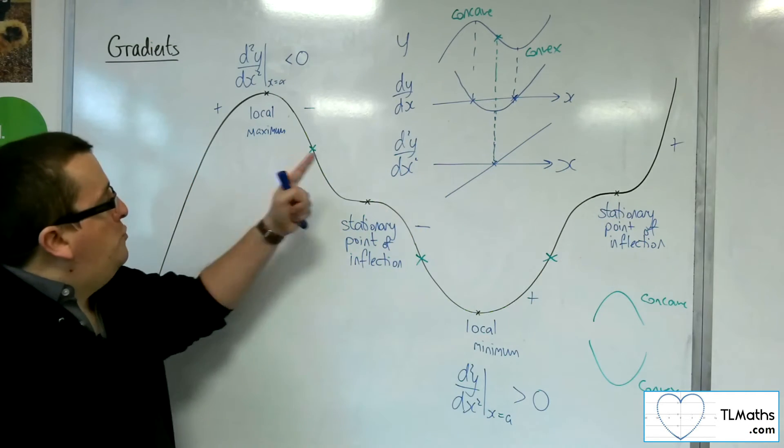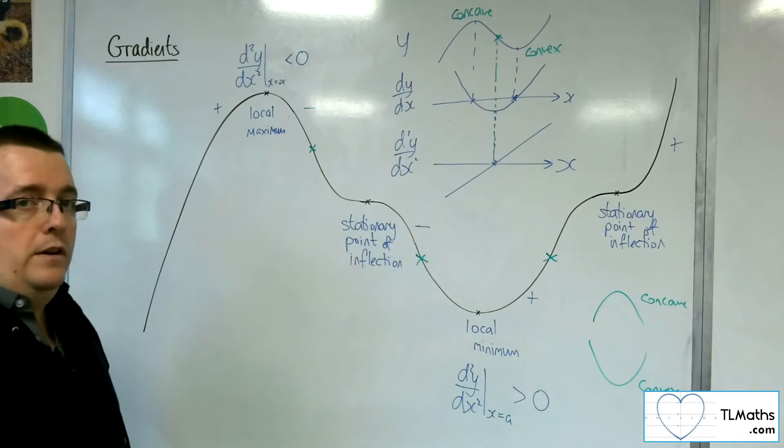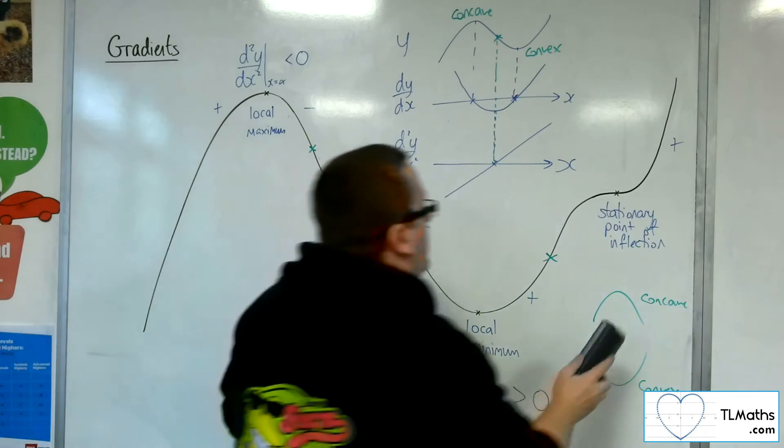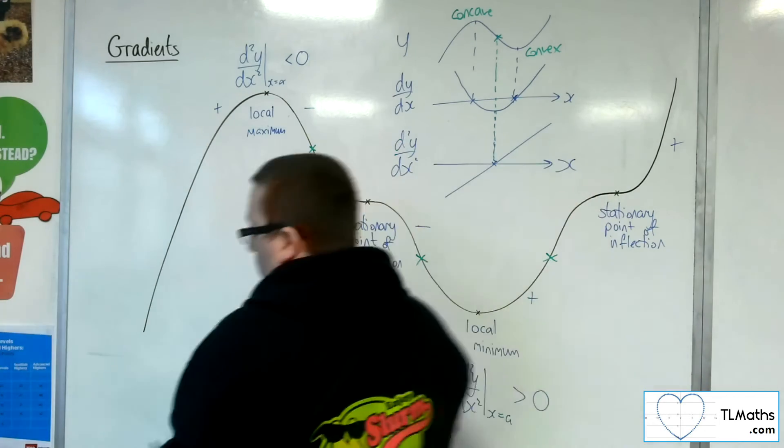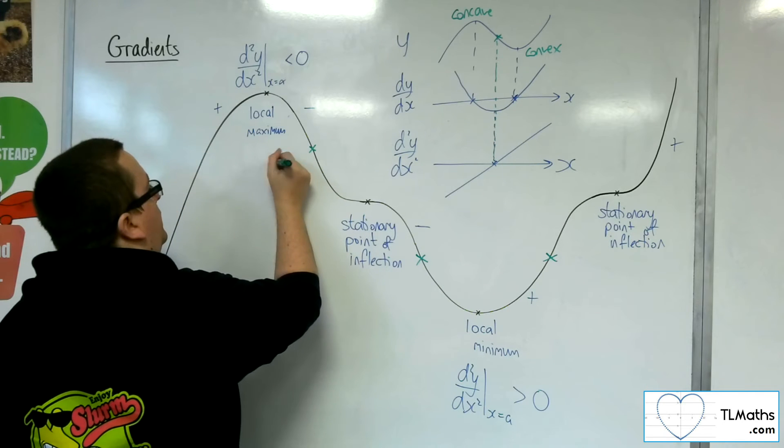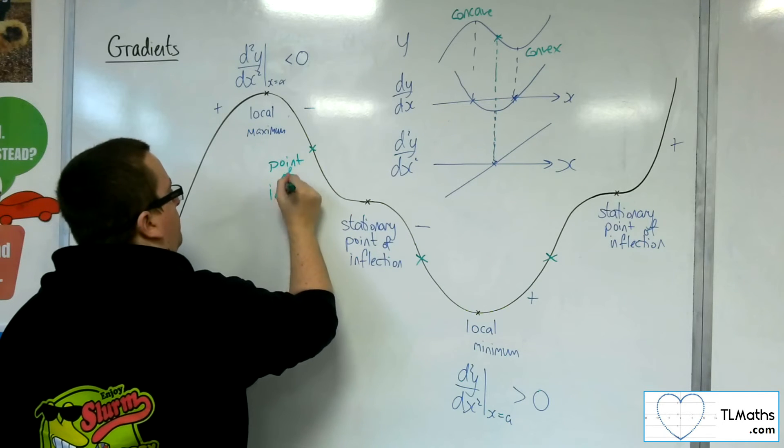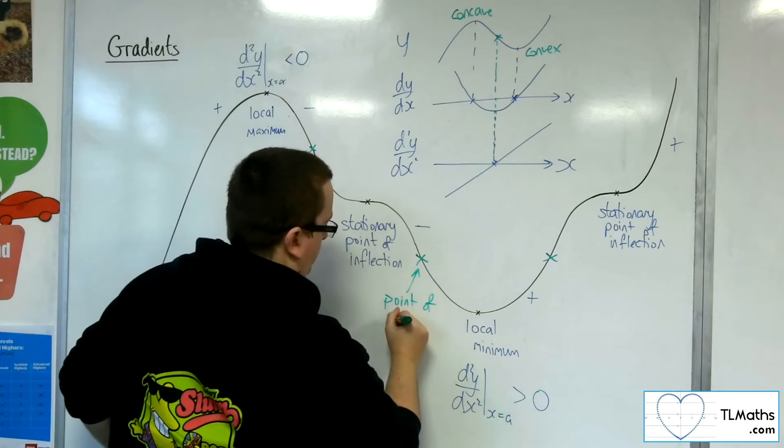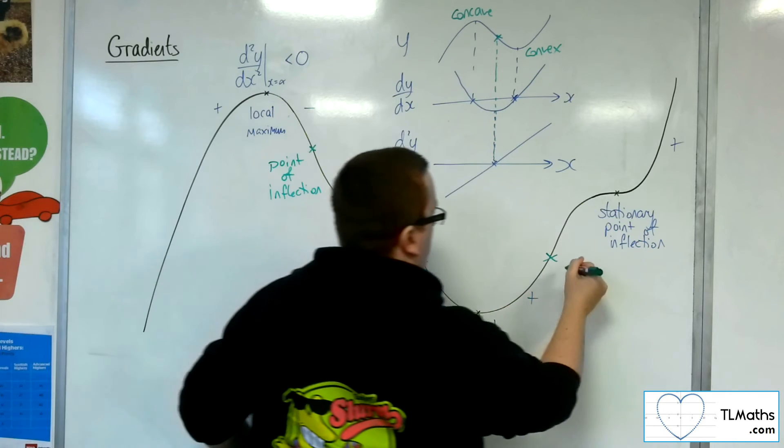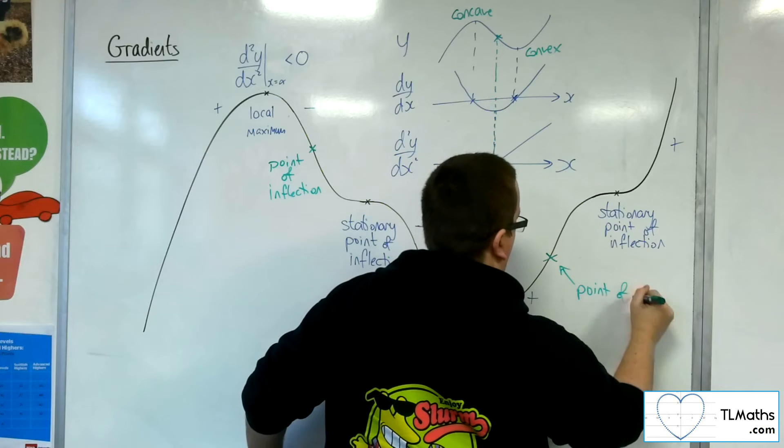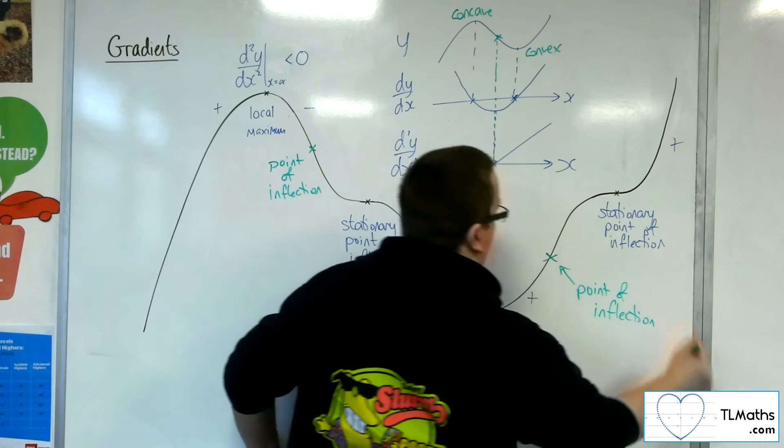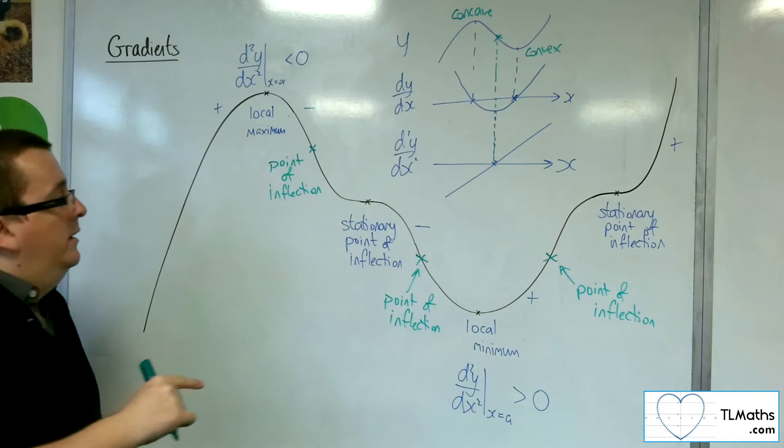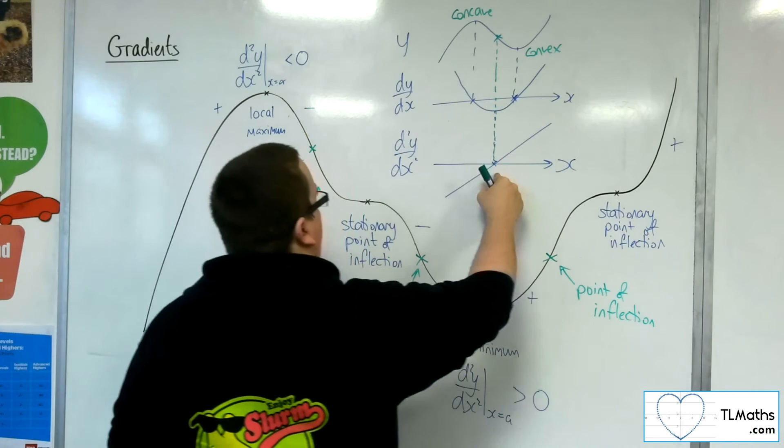So, these three points here that I've identified aren't stationary points of inflection. They are just referred to as points of inflection. So, this is a point of inflection. So, we've identified that that is when the second derivative is zero.